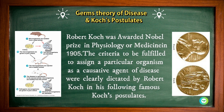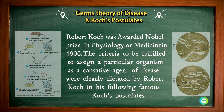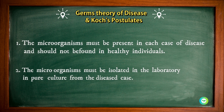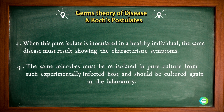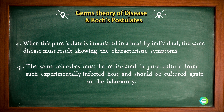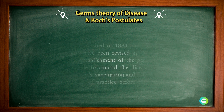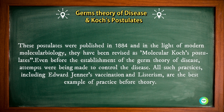The criteria to assign a particular organism as the causative agent of disease were clearly dictated by Robert Koch in his famous Koch's postulates: (1) The microorganism must be present in each case of the disease and should not be found in healthy individuals. (2) The microbe must be isolated in the laboratory in pure culture from the diseased case. (3) When this pure isolate is inoculated into a healthy individual, the same disease must result, showing characteristic symptoms. (4) The same microbe must be re-isolated in pure culture from such an experimentally infected host and cultured again in the laboratory. These postulates were published in 1884, and in the light of modern molecular biology, they have been revised as Molecular Koch's postulates.